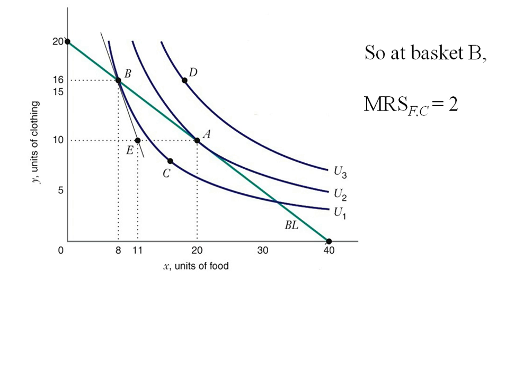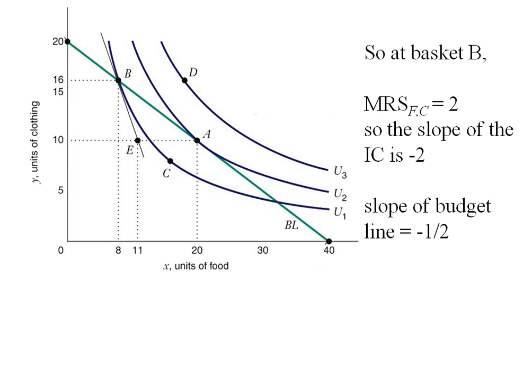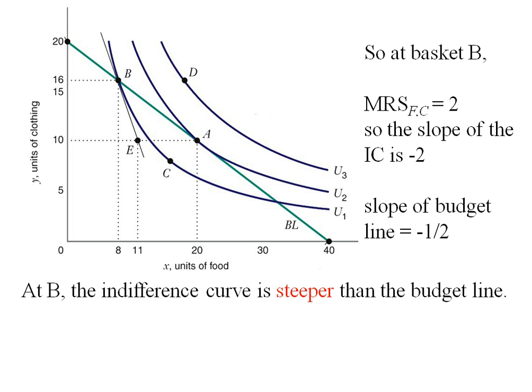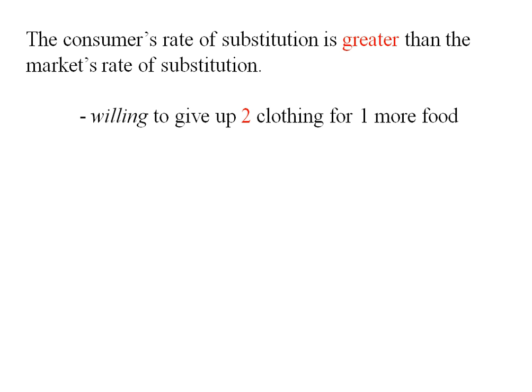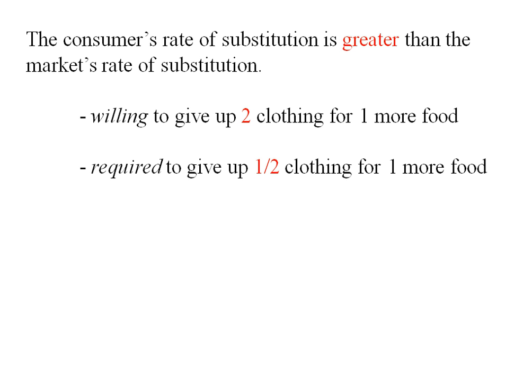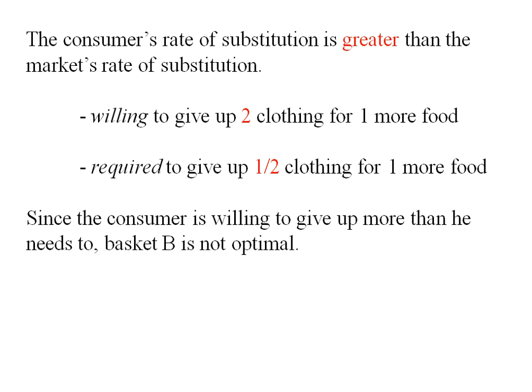At basket b, the marginal rate of substitution is 2, which tells us the slope of the indifference curve at point b is negative 2. The slope of the budget line is negative one half. So at point b, the indifference curve is steeper than the budget line. This means the consumer's rate of substitution is greater than the market's rate of substitution. The consumer is willing to give up 2 clothing to get one more food, but at the market rate they're only required to give up half a clothing for one more food. Since the consumer is willing to give up more than they need to, basket b is not optimal.